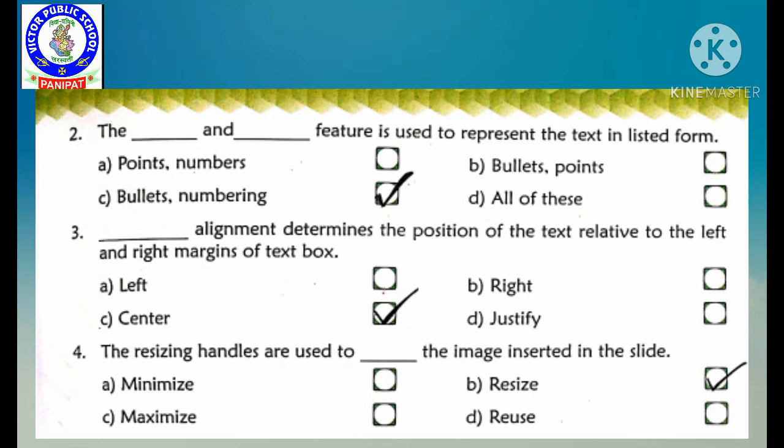Third is: dash alignment determines the position of the text relative to the left and right margins of the text box. Kaun si alignment text ki left or right margins se position ko determine karti hai? Our options are left, right, center, or justify. We will tick C, center.